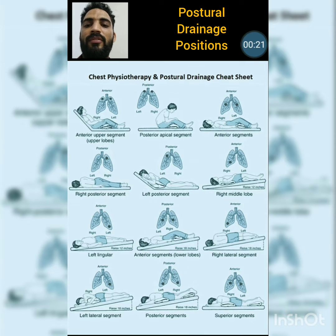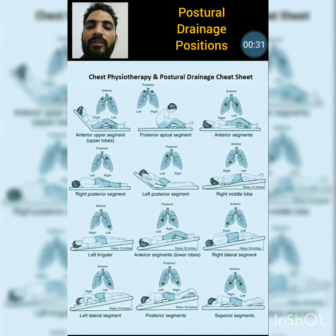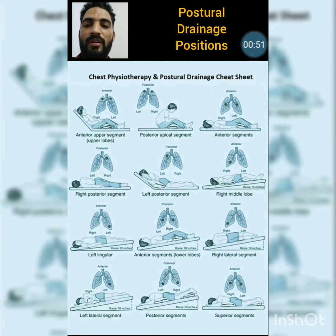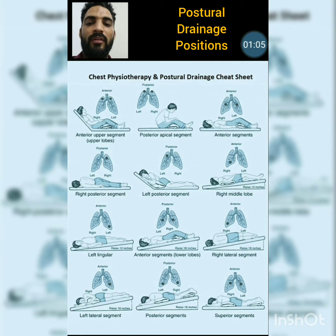The first position is used for the anterior upper segment, or the anterior apical segments. This is called the semi-recumbent position, in which the patient's head side is at around 45 degrees, used for the apical segments removal technique. The therapist will provide percussion or tapping over the supraclavicular region and guide the patient through active respiratory exercises like huffing, coughing, deep breathing, and expiration techniques.